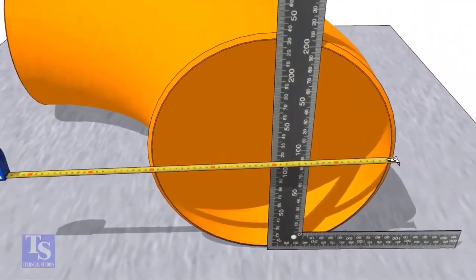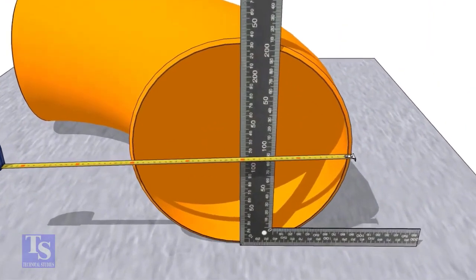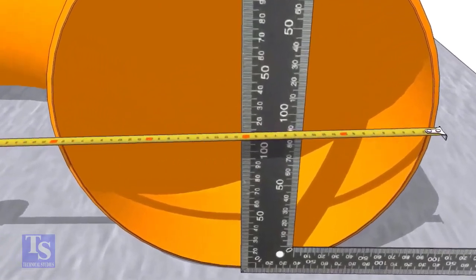Put a right angle at the center of the elbow. Make sure the distance from the edge of the elbow to the face of the right angle is equal.